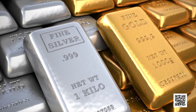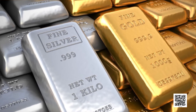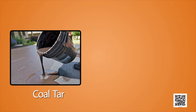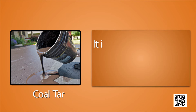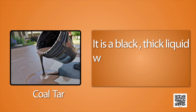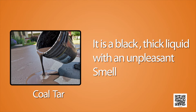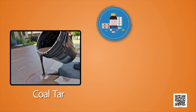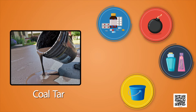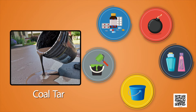The second useful product obtained by the processing of coal is coal tar. It is a black, thick liquid with an unpleasant smell. It is a mixture of about 200 substances. Products obtained from coal tar are used as a starting material for manufacturing various substances used in everyday life and in industries — like synthetic dyes, drugs, explosives, perfumes, plastics, paints, photographic materials, roofing materials, etc.